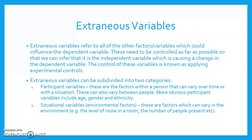Extraneous variables can be subdivided into two categories. One: participant variables — these are the factors within a person that can vary over time or with a situation, and can also vary between people. More obvious participant variables include age, gender, and ethnicity. Two: situational variables, or environmental factors — these are factors which can vary in the environment, e.g. the level of noise in a room or the number of people present.